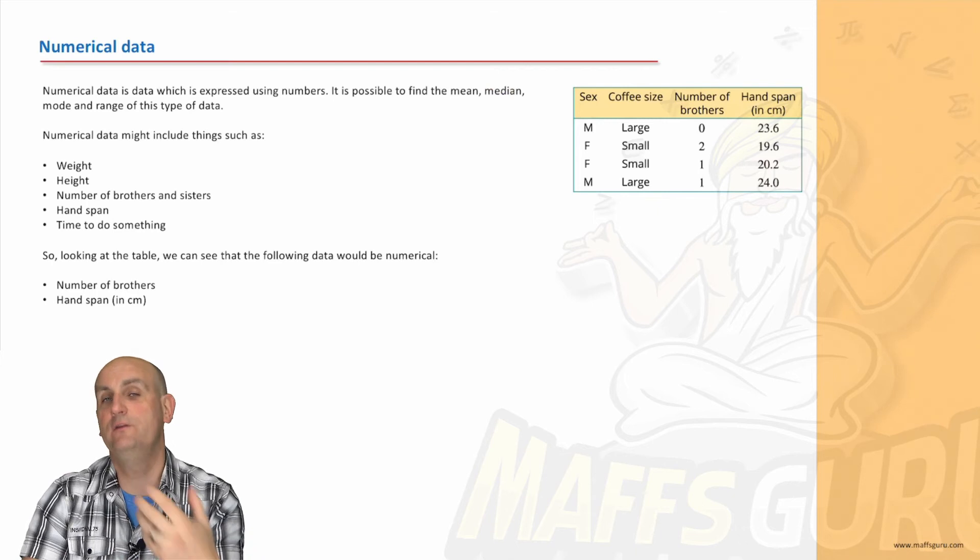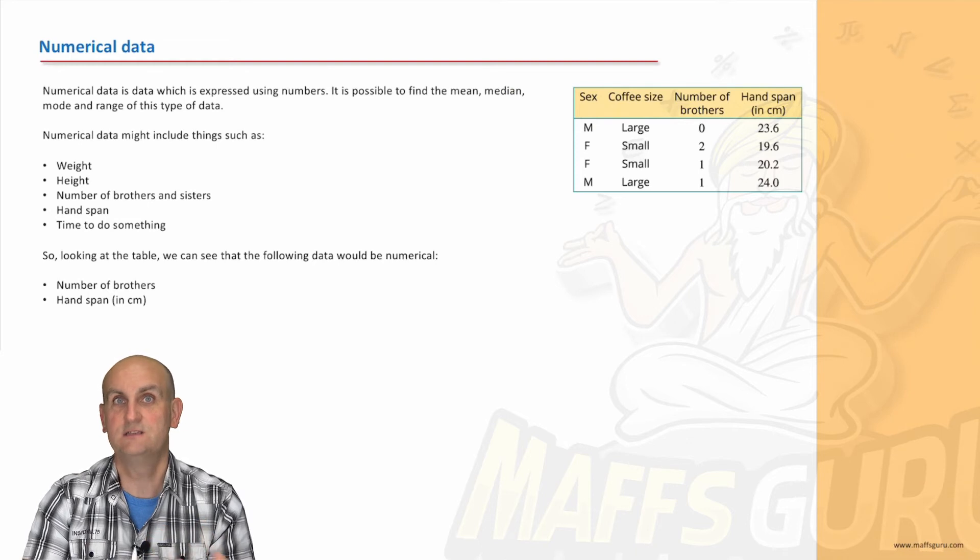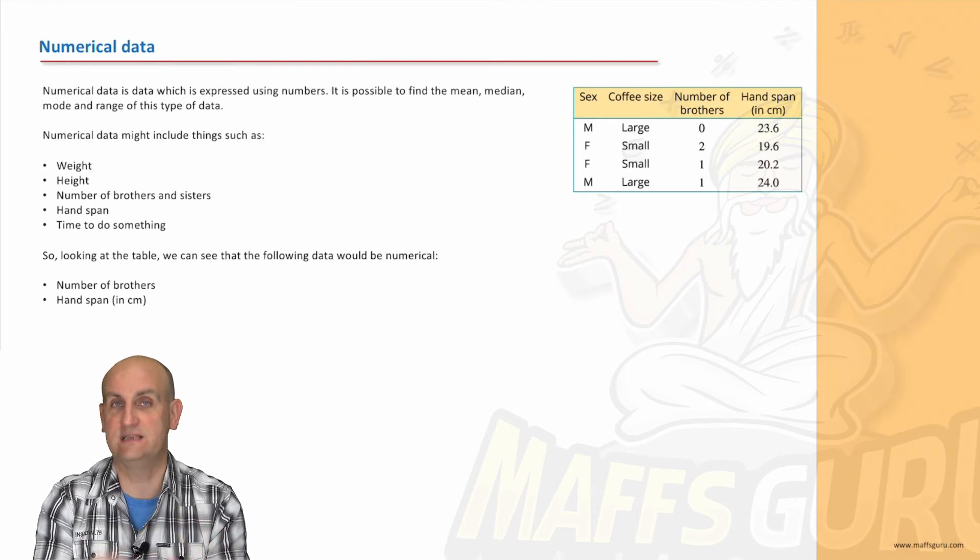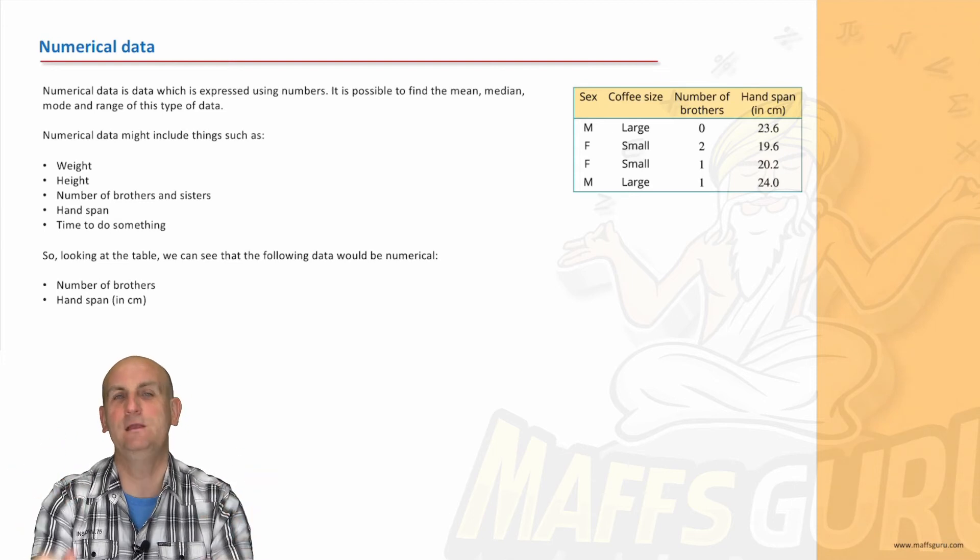So the flip side of this is numerical data. And this is data that can be measured or counted. So when I say measure, things like height and weight and time. These things, so height and weight and time, can have decimal value answers. And they can be decimals to infinity and beyond.